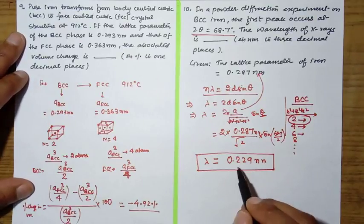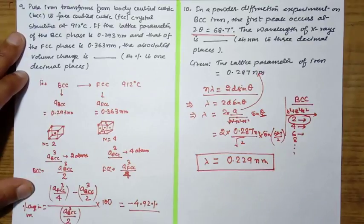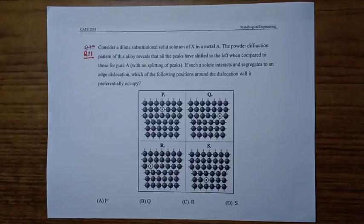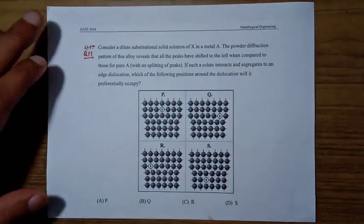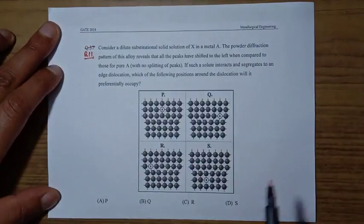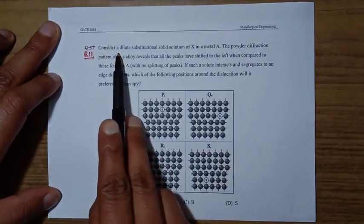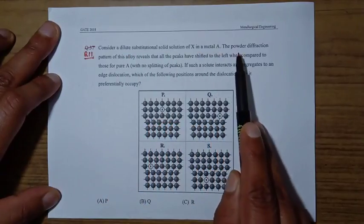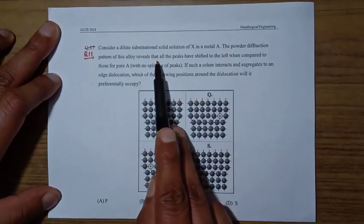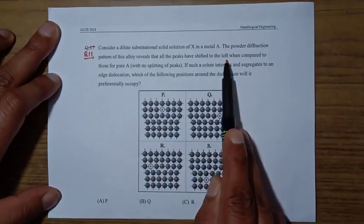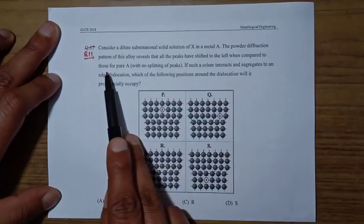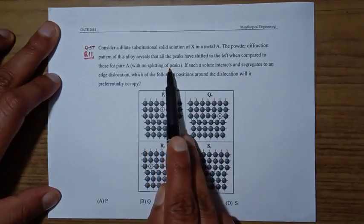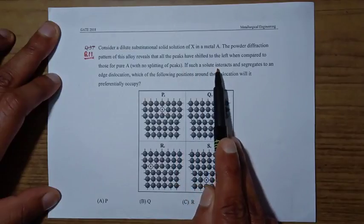This is the last question of physical metallurgy, the 11th question. Consider a dilute substitutional solid solution of X in a metal A. The powder diffraction pattern of this alloy reveals that all the peaks have shifted to the left when compared to those for pure A, with no splitting of peaks. If such a solute segregates to an edge dislocation, which position around the dislocation will it preferentially occupy?